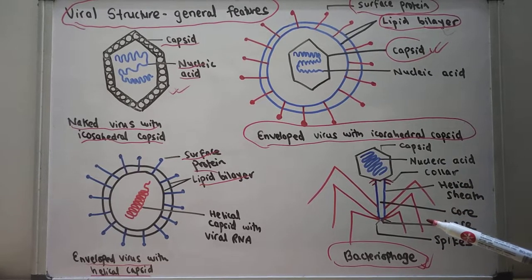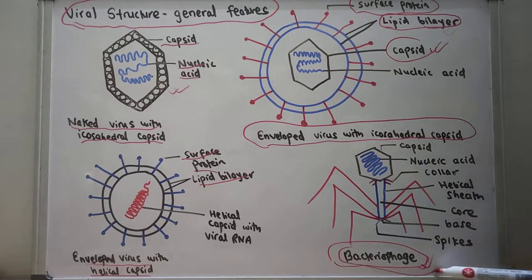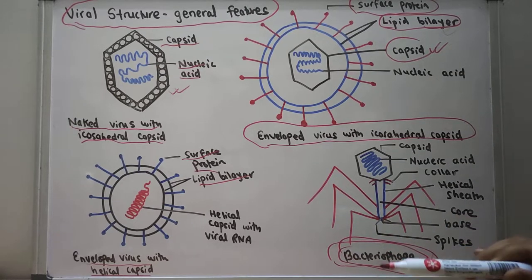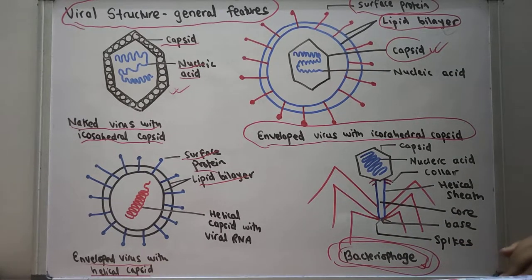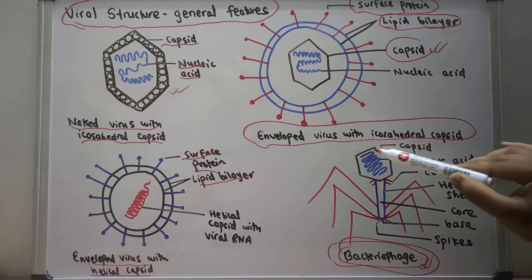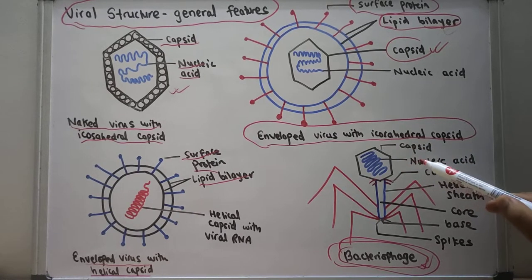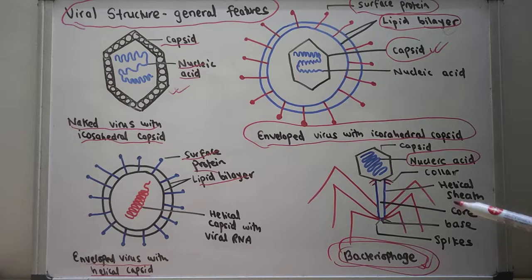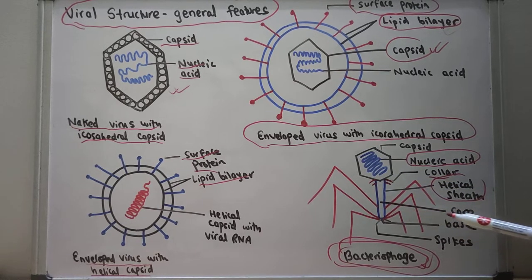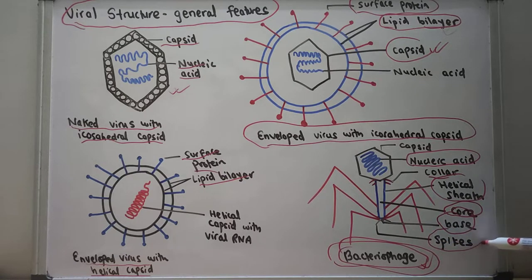The last virus is known as the bacteriophage. It is called a bacteriophage because it engulfs inside bacteria. You can see there is an icosahedral capsid, and inside this icosahedral capsid you can see the nucleic acid. There is also a helical sheath from the capsid, and there is a core between the helical sheath. At the base there is also a spike present.